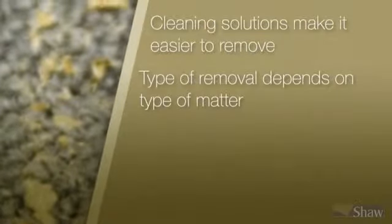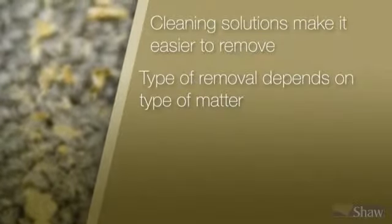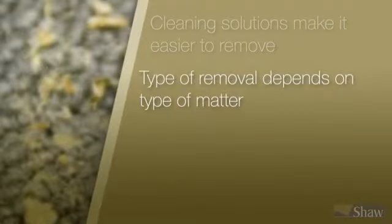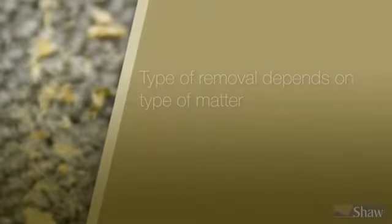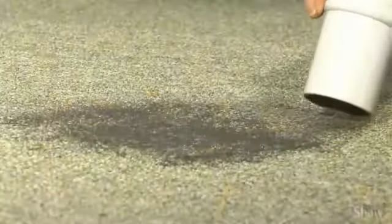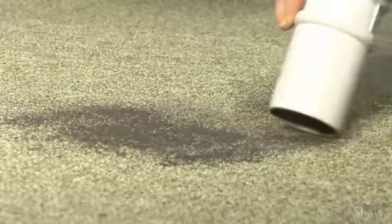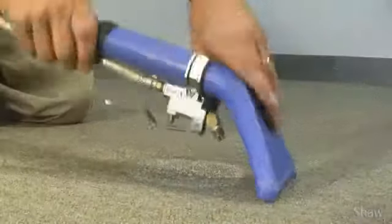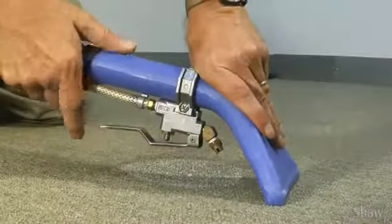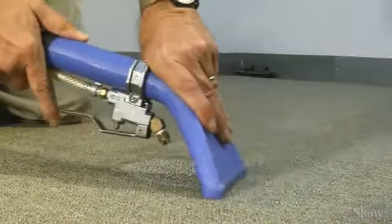The type of removal process depends on the type of matter you're trying to remove. Dry, loose matter can be removed using moving air, as in a vacuum cleaner. More deeply embedded or oily matter may require moving water and heat, as in hot water extraction, with the addition of a cleaning solution.